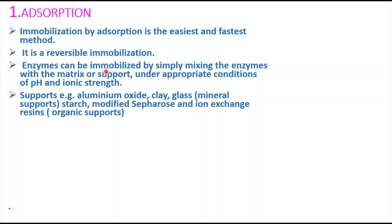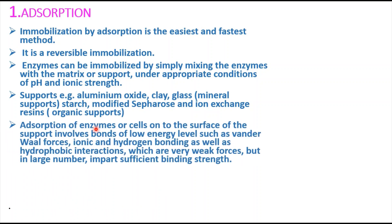What are the different supports or matrices used for the adsorption method? We can use aluminium oxide, clay, and glass, which are considered mineral supports. As organic supports, we use starch, modified Sepharose, and ion exchange resins. The enzymes or cells in the adsorption method are connected with the matrix or support by certain bonds of very low energy levels, which is why we can easily separate both.